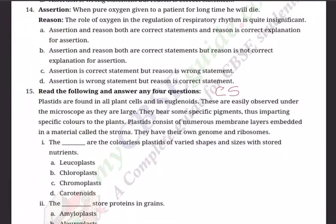They bear some specific pigments, thus imparting specific colors to the plants. Plastids consist of numerous membrane layers embedded in a material called stroma. They have their own genome and ribosomes. So basically, the concept being discussed in the paragraph is plastids.